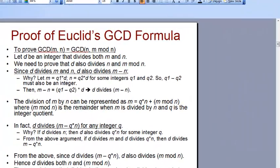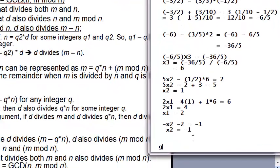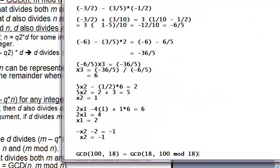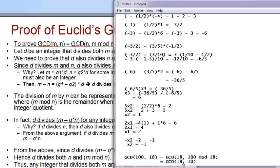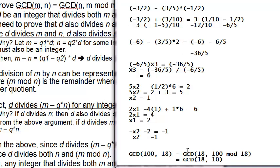So that's a very powerful thing. For example, if you start with GCD of 100 comma 18, that's nothing but the GCD of 18 comma 100 mod 18, which comes out to be GCD of 18 comma 10, since 100 mod 18 is 10. Whatever divides 118 also divides 18 and 10. There's no integer that divides 118 and cannot divide 18 and 10. Everything that divides 118 can also divide 18 and 10. So that's what this theorem is, and the greatest among this is the GCD.